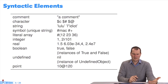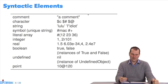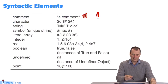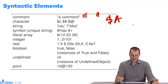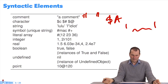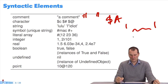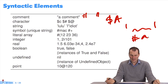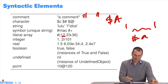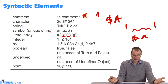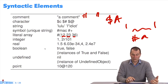So what syntactical elements are there in Pharaoh? You have comments which start with double quotation marks. Characters are always preceded by a dollar sign — dollar sign A is the character A. Strings start and finish with a single quotation mark. You have symbols, which are unique strings — these begin with the hashtag. Hashtag A is the symbol A. There are literal arrays — here I have one with 12, 23, and 36, three elements. Integers have various representations, but we usually use representations in base 10.